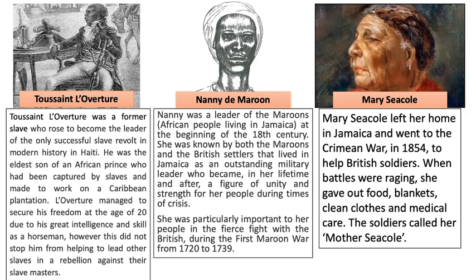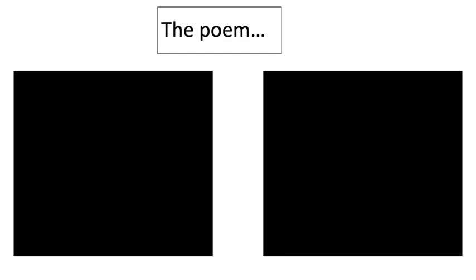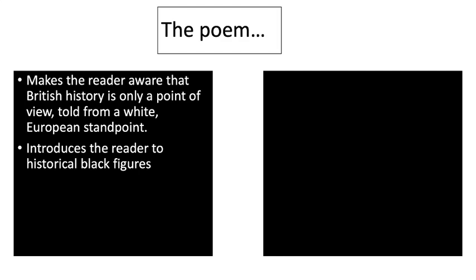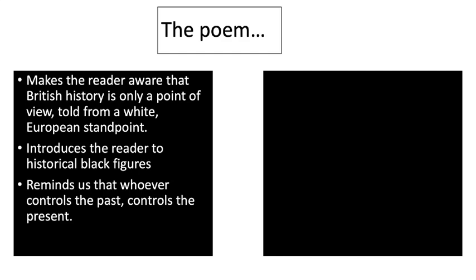Here are some of the main ideas of the poem. Firstly, it makes the reader aware that British history is only a point of view told from a white European standpoint — something relevant for us all to consider when we learn aspects of British history. It introduces readers to historical black figures of central importance to both the Caribbean and British history, people like Mary Seacole, very important in the Crimean War. It reminds us that whoever controls the past controls the present — the people that control information control our understanding of events, and that's an incredibly powerful position to be in.